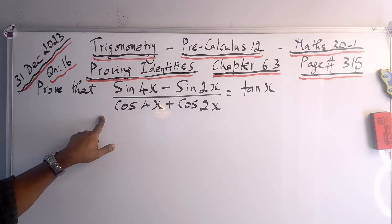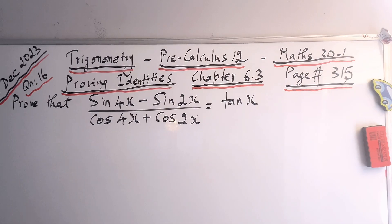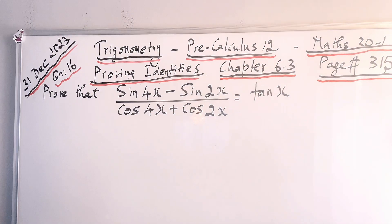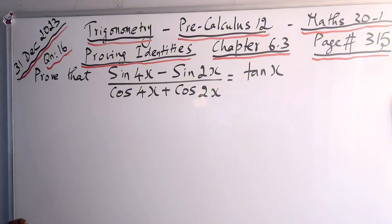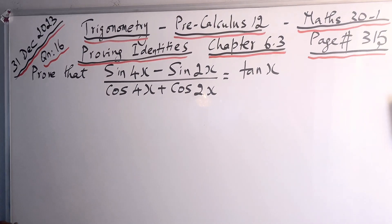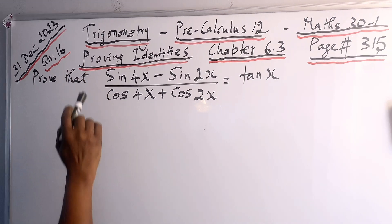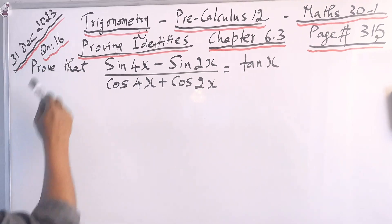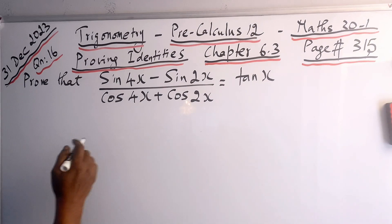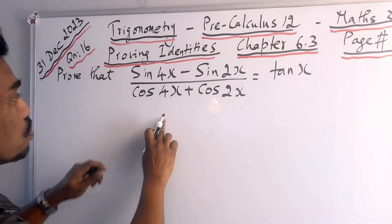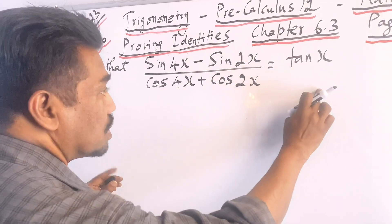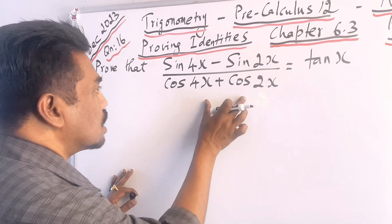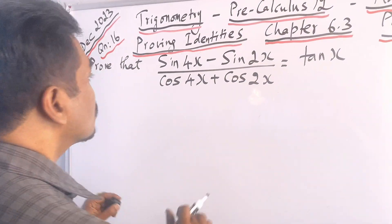Today we are going to prove the trigonometric identity: sine 4x minus sine 2x over cos 4x plus cos 2x equals tan x. It's from the topic trigonometry, Pre-Calculus 12, Alberta curriculum, 30-1 course, Chapter 6.3 on proving identities, page 315, question number 16. We have to prove the left-hand side identity will be equal to the right-hand side, which is just tan x.